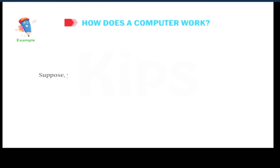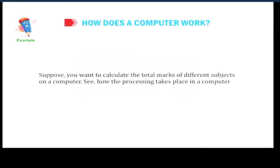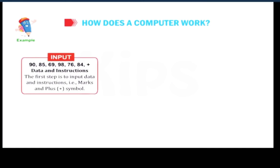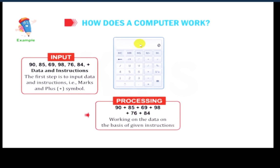Suppose you want to calculate the total marks of different subjects on a computer. See how the processing takes place in a computer. The first step is to input data and instruction: marks and plus symbols. Just like 90, 85, 69, 98, 76, 84 and plus symbol.